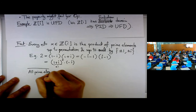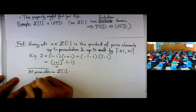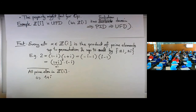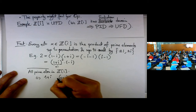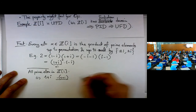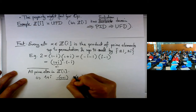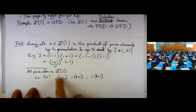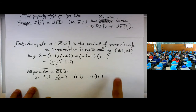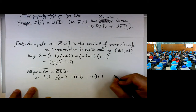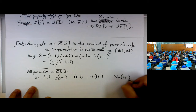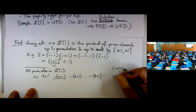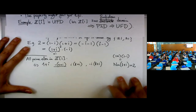The prime elements in Z[i]: first, 1 plus i is one of them. Whenever I list a prime element, I should say that 1 plus i, i times (1 plus i), and minus i times (1 plus i) are all associated — all off by units. I want to point out the norm of all these numbers, which is 2. Recall that the norm is (1 plus i)(1 minus i) = 2.